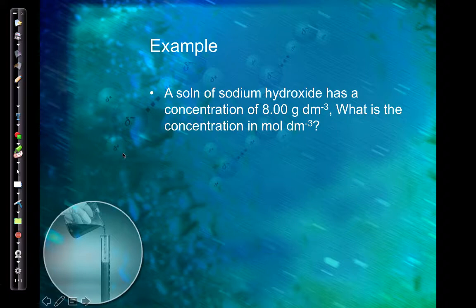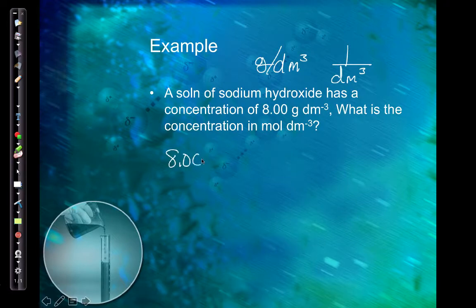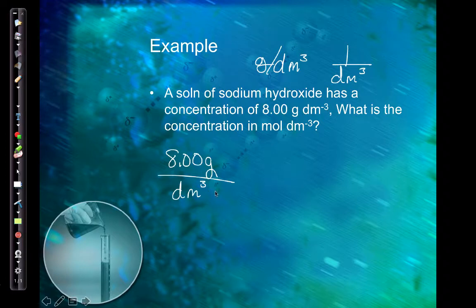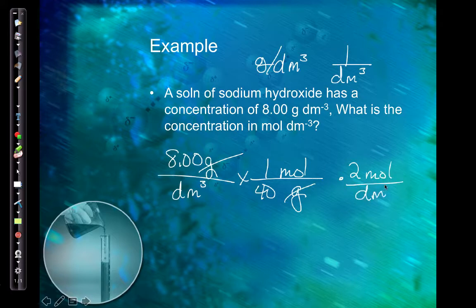I have a solution of sodium hydroxide with a concentration of 8 g dm⁻³. That negative exponent just means grams per dm³, or grams per liter. What's the concentration in moles per liter? This is one of the few times we start with a conversion factor, because we're converting grams into moles while leaving the dm³ alone. Grams on the bottom, moles on top: 1 mole equals 40 grams. So 8 divided by 40 gives me 0.2 moles per dm³.